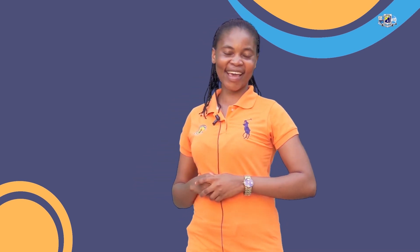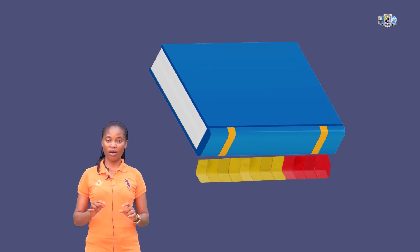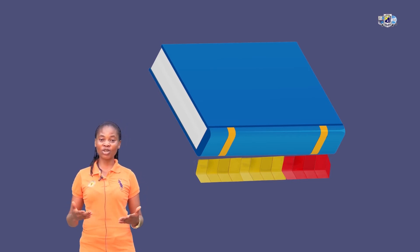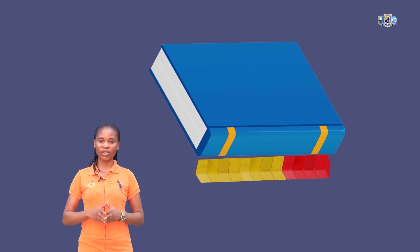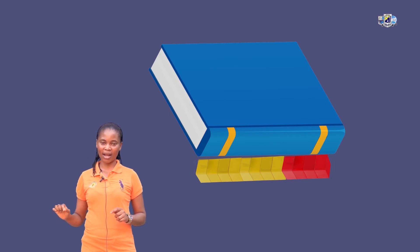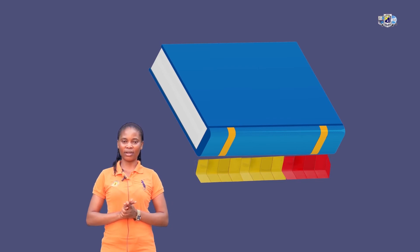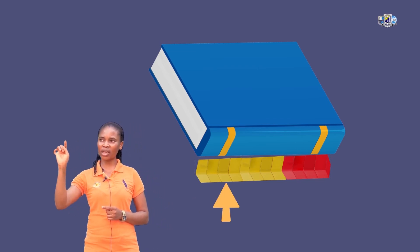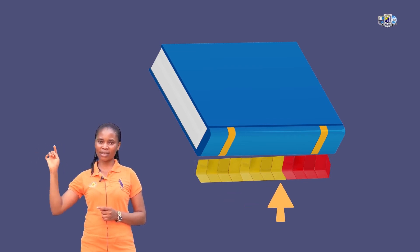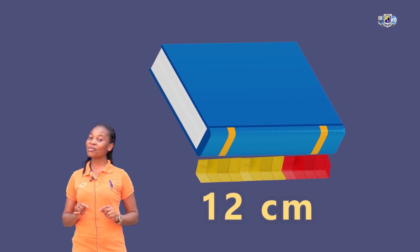The next activity is our application problem. The question says: Amy used centimetre cubes to measure the length of her books. She used 8 yellow centimetre cubes and 4 red centimetre cubes. How many centimetre cubes long was her book? Arrange your 8 and 4 centimetre cubes and count them together: 1, 2, 3, 4, 5, 6, 7, 8, 9, 10, 11, 12. So Amy's book is 12 centimetres long.